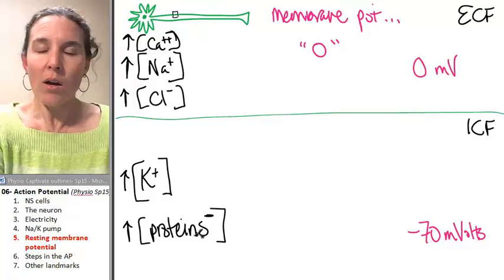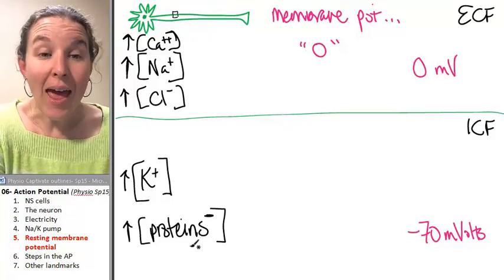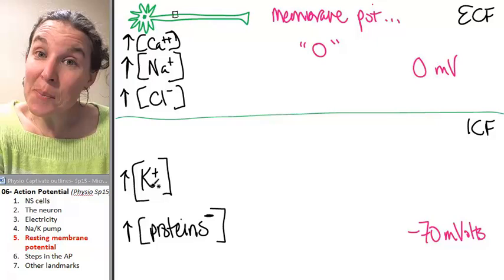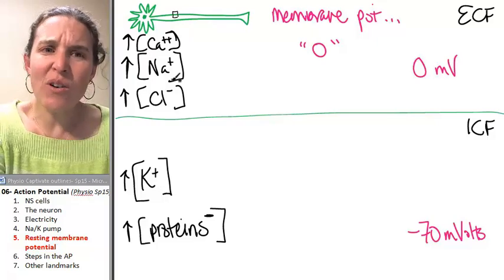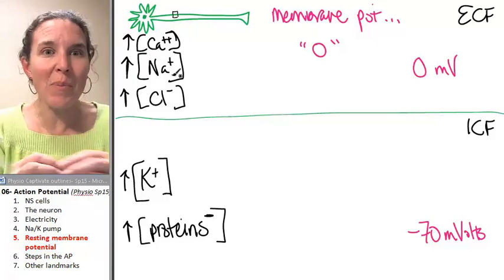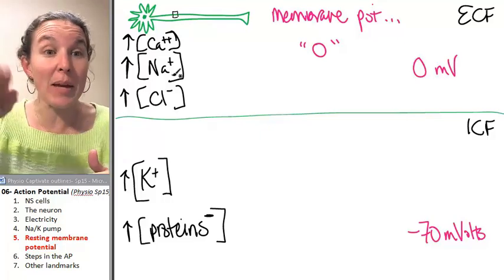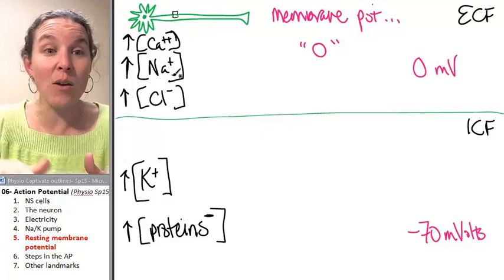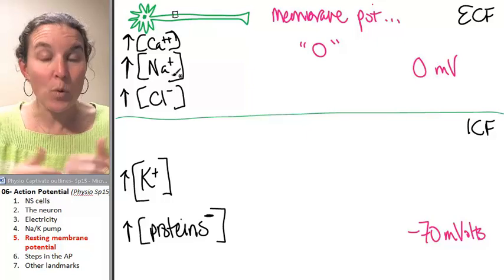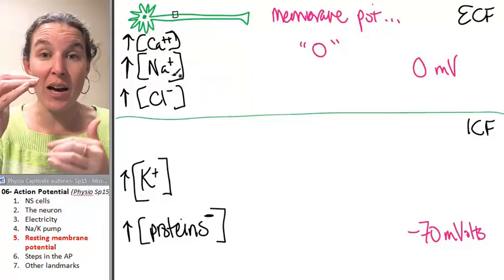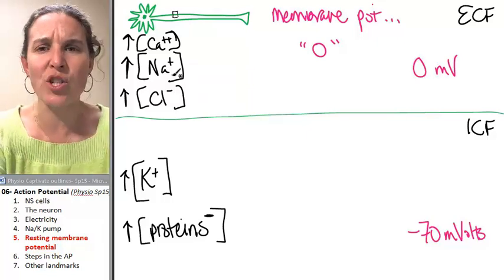But outside it's more positive than inside. Inside it's negative 70 millivolts more negative. Why? Because you got all these proteins in there and you've got a lot of potassium, but you got rid of a lot more sodium. Remember we pumped three sodiums out and only two potassiums in? So we're pumping out more positives than we're leaving in, which also contributes to a difference in charge between our two environments.